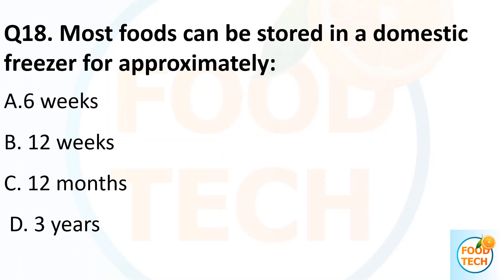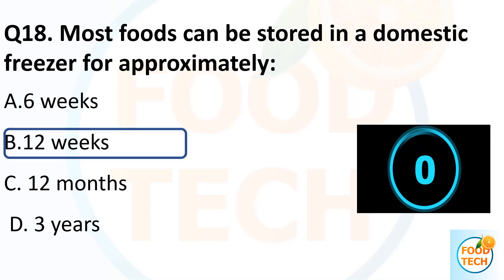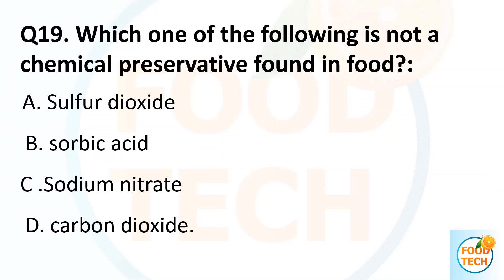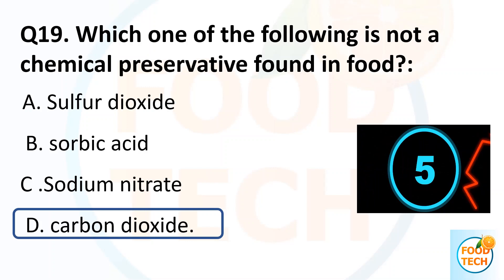Question 18. Most food can be stored in a domestic freezer for approximately: A. 6 weeks. B. 12 weeks. C. 12 months. D. 3 years. Question 19. Which one of the following is not a chemical preservative found in food? A. Sulfur dioxide. B. Sorbic acid. C. Sodium nitrite. D. Carbon dioxide. Answer D. Carbon dioxide.